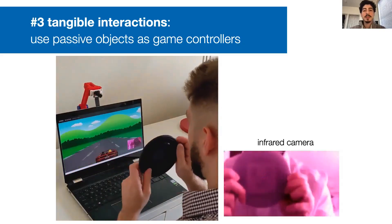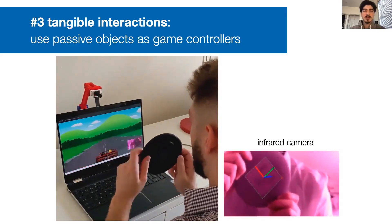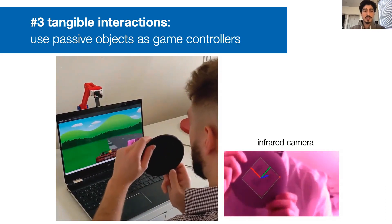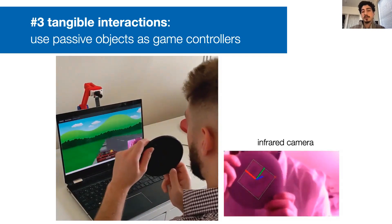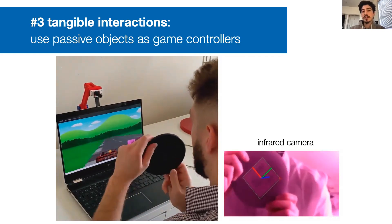In our final use case, you see how this plastic desk, which doesn't have any electronics in it, is used as a game controller. Even though the wheel is rotationally symmetric, the IR camera can see the fiducial marker inside and infer its orientation.